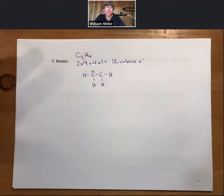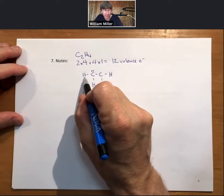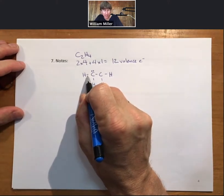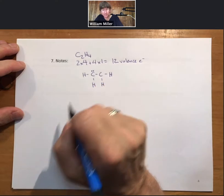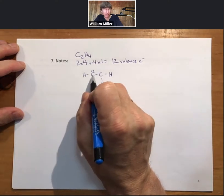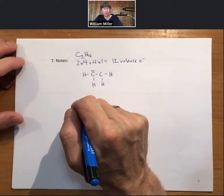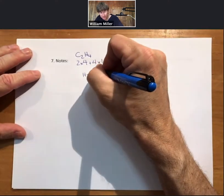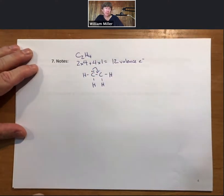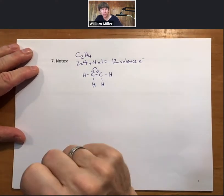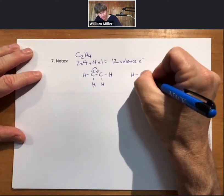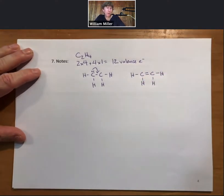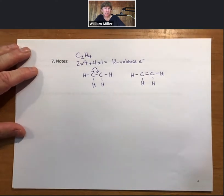We can't put the remaining electrons on the H's because hydrogen only wants two valence electrons — the same as helium — and it already has two. So we put them on one of the carbons. We then see the other carbon does not have an octet, so we take a pair of electrons from the carbon that has an octet and share it with the carbon next door, giving us the final Lewis structure for C2H4.